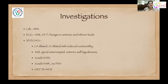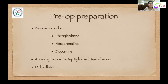On investigations, patient's lab reports were within normal limits. ECG showed normal sinus rhythm with ST-T changes in anterior and inferior leads. On 2D echocardiography, left atrium was dilated, LV dilated with reduced contractility. There was mid-apical anterior septal and anterior wall hypokinesia. Patient had grade 2 diastolic dysfunction, grade 2 MR, no pulmonary hypertension. LV ejection fraction was 35 to 40%.